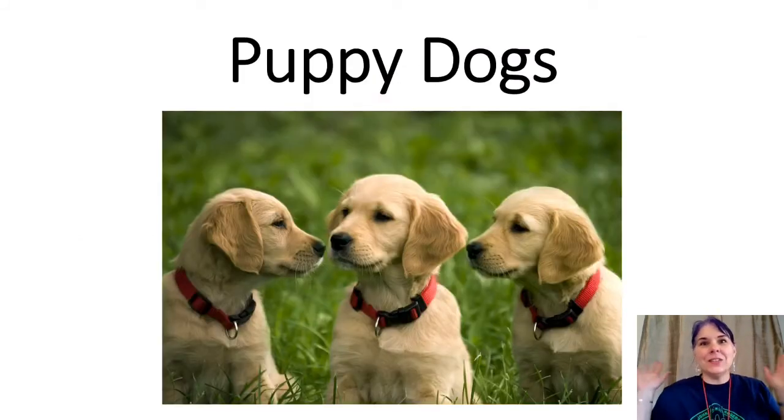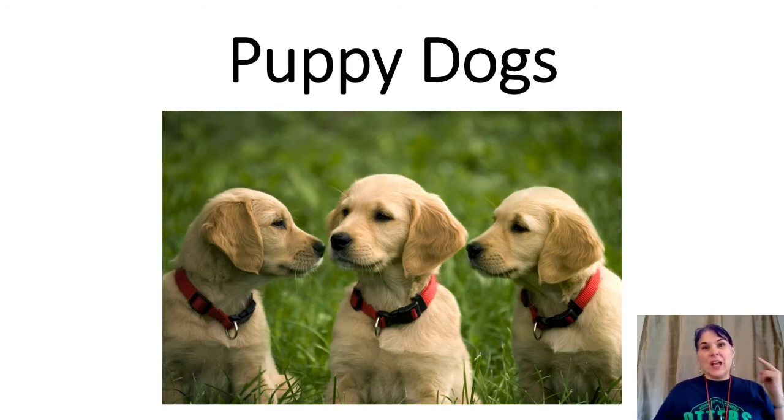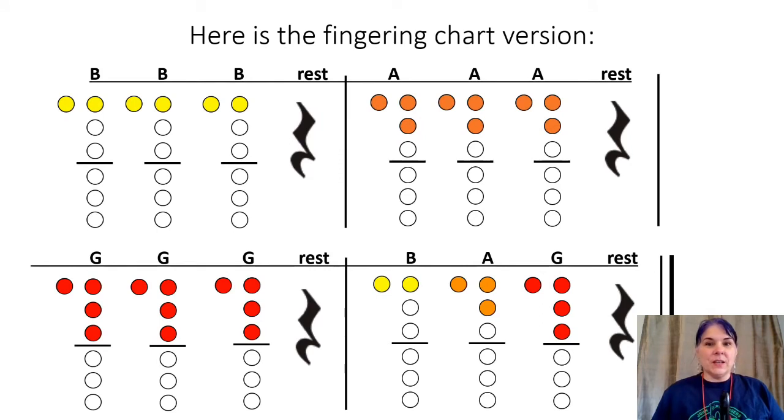Puppy Dogs. Who doesn't love a puppy dog? I love them so much I have two. Let's take a look at the fingering chart version. I see that we have one measure at the end where we're going to use all three, so that's going to be our tricky measure. Let's read through first. You can add your fingering along with it, but we're not going to play, we're going to speak like this: B B B, A A A, G G G.